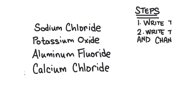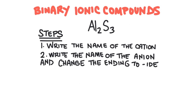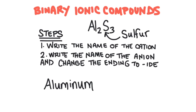Here are the steps to turn a formula into a name. First, write the name of the cation — in this case, the cation is aluminum. There's no need to worry about the subscripts. Second, write the name of the anion and then change its ending to "-ide". Again, no need to worry about the subscripts. So this compound is called aluminum sulfide.